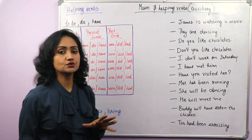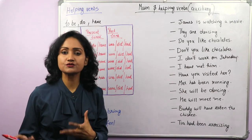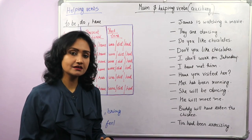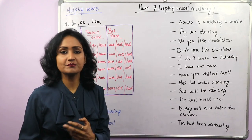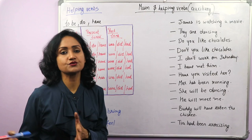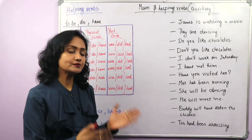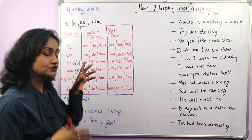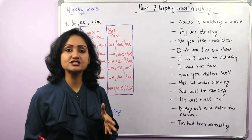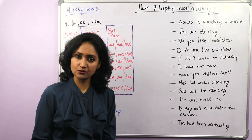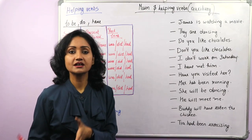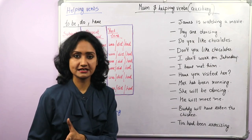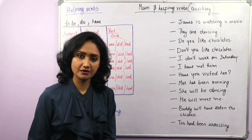The to-be verbs have different forms: is, am, are, was, were, being, be, been — these are all different forms of to-be verbs. Do and have can be used as helping verbs and sometimes as the main verb also, depending upon the sentence.